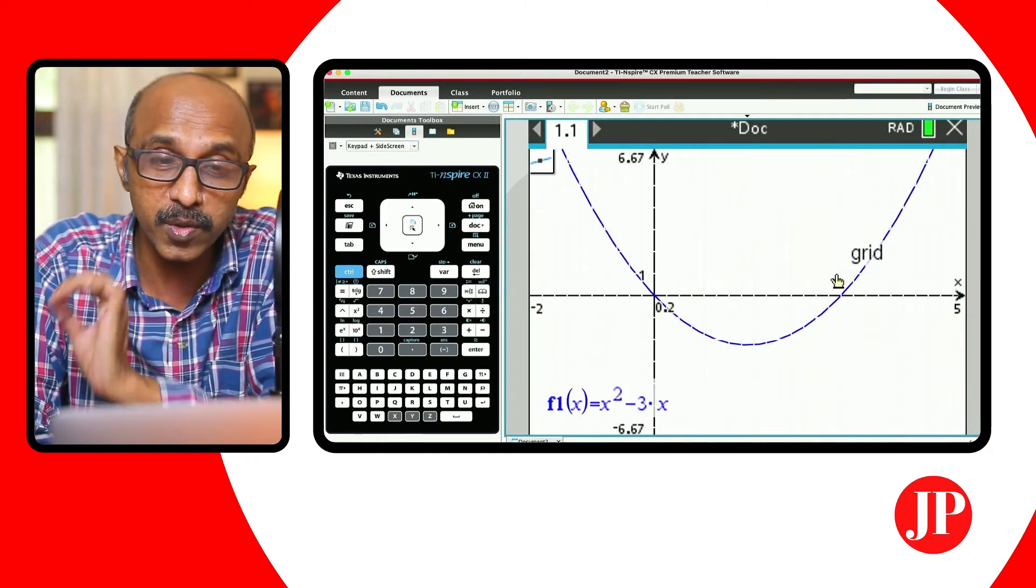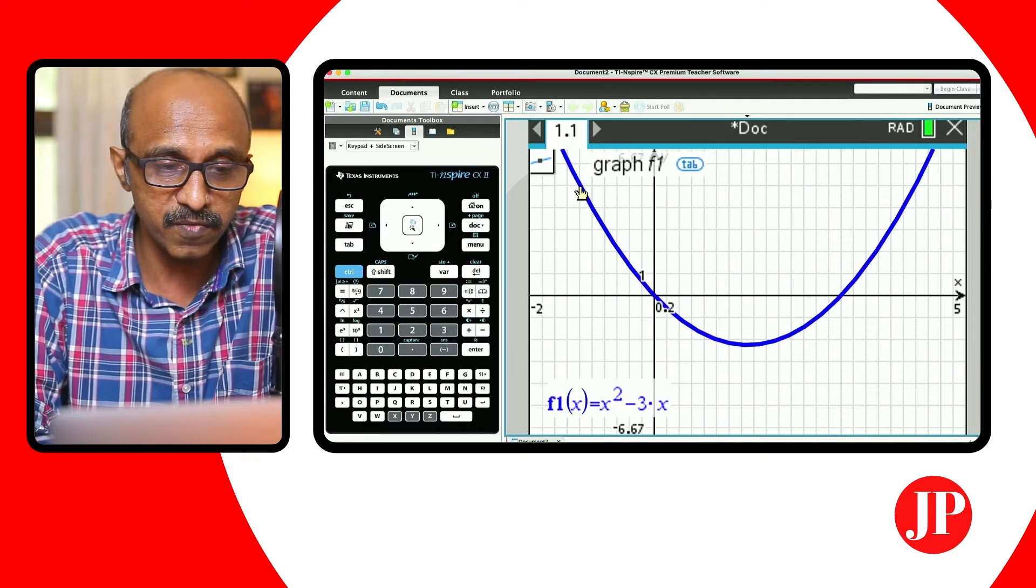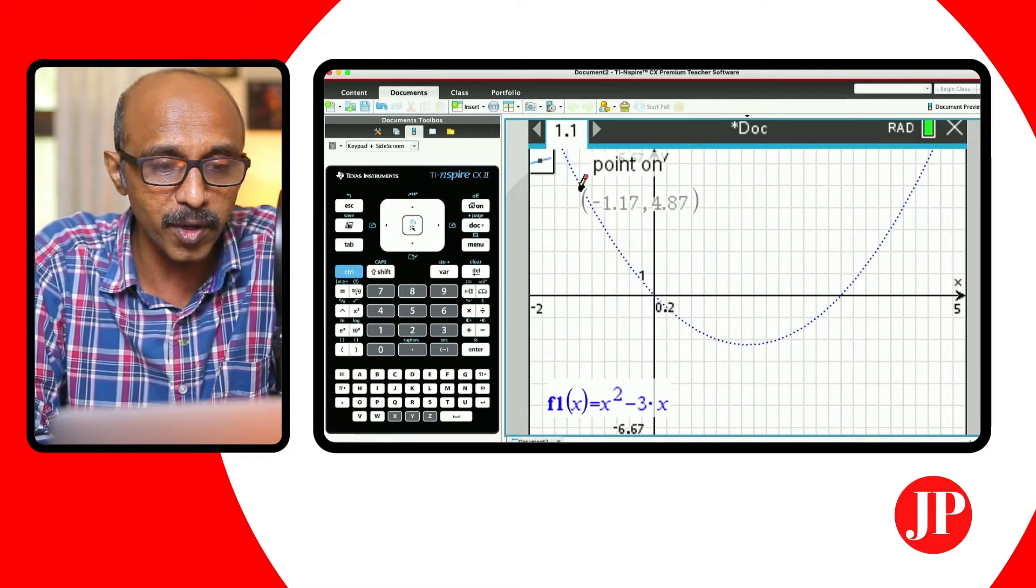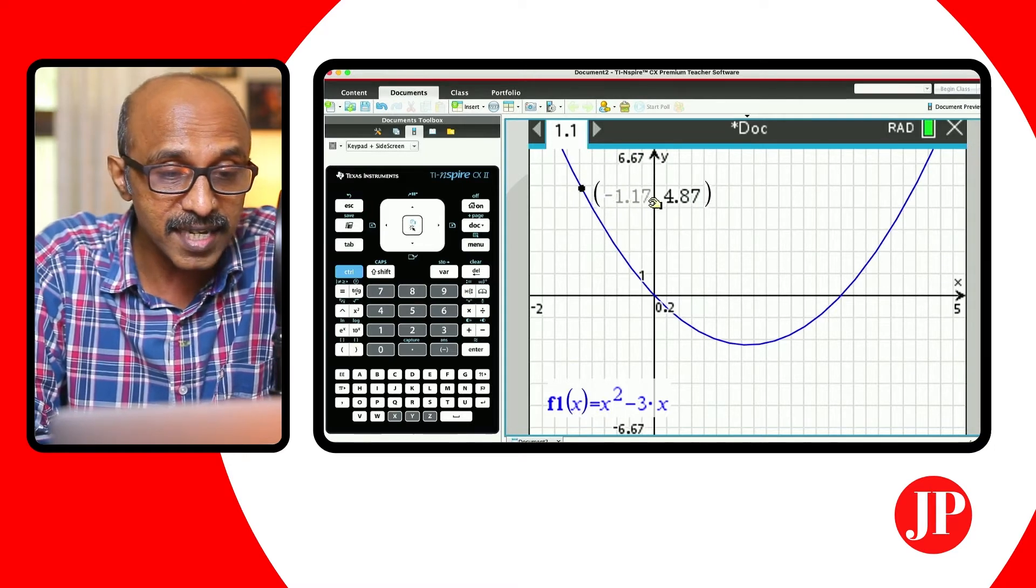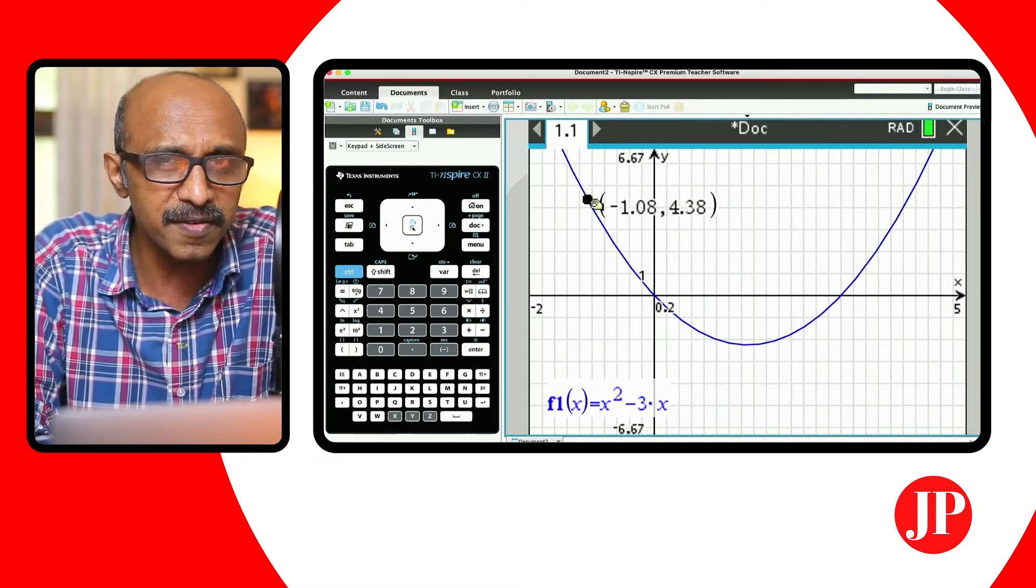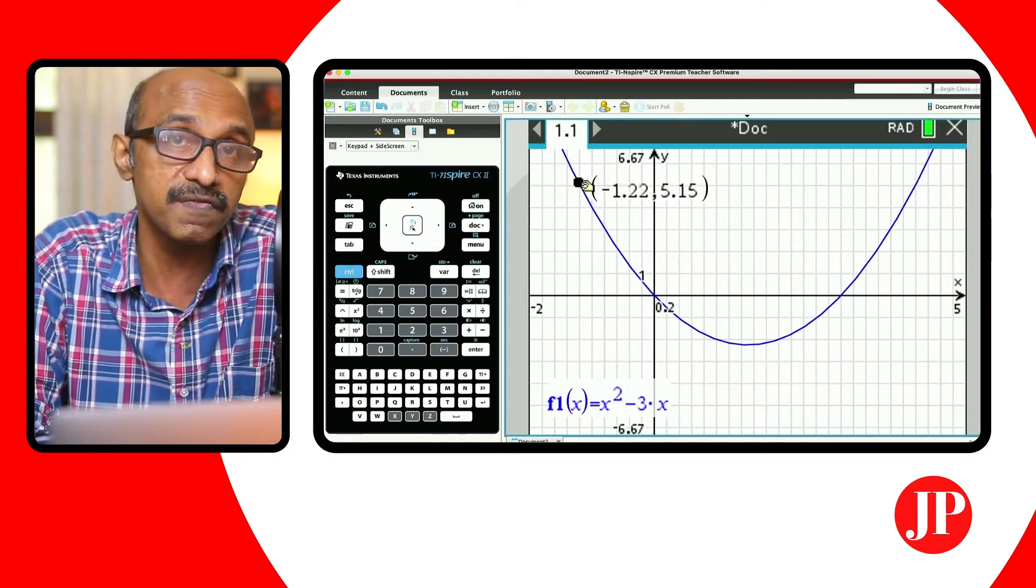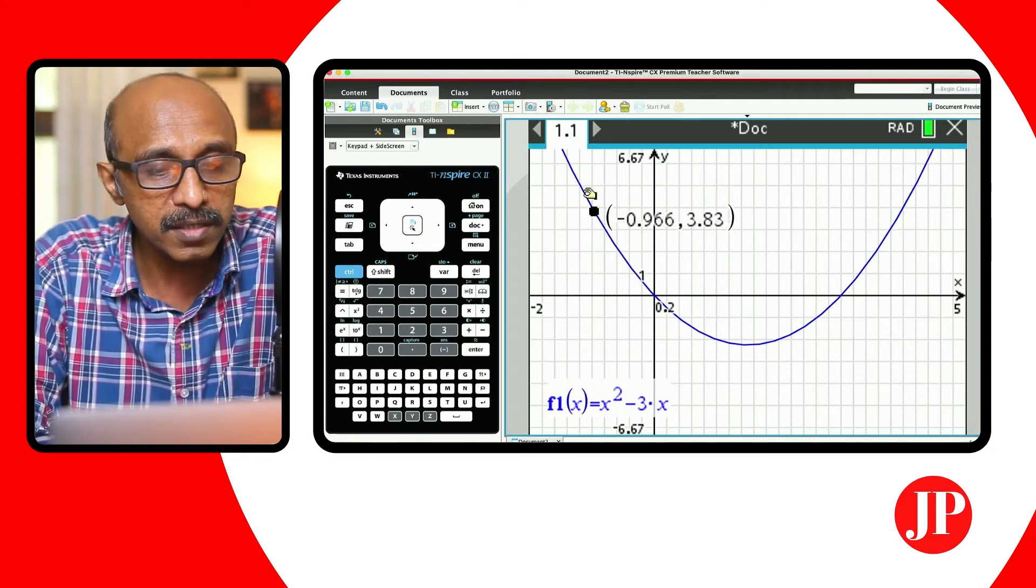So rather than just going to x equals 3, we'll just go somewhere just for demonstration purposes. And I just click the point there. So you can see that it shows you the coordinates of the point. Even after I hit escape, the point can be moved around. That's the difference between this feature and trace feature.